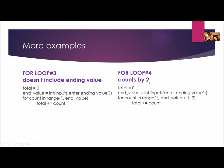Loop four counts by two. So with an ending value of five, I start at one and go up to and including five, but counting by two. So I go one, three, five. This loop will only run three times.